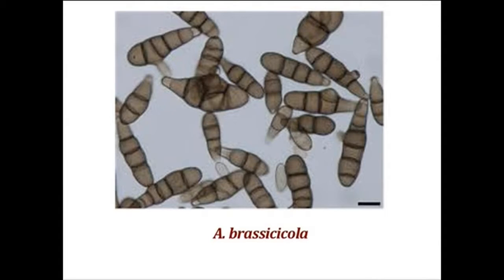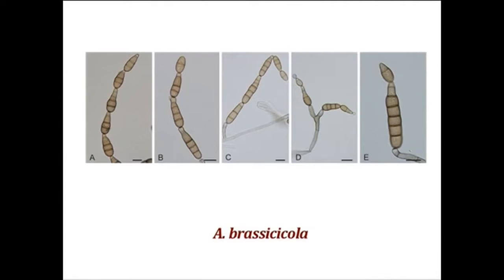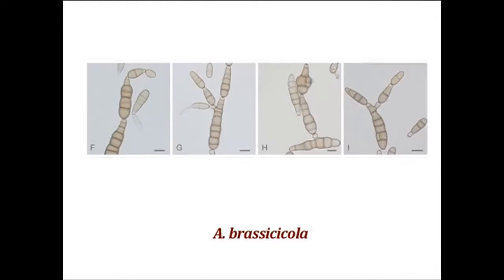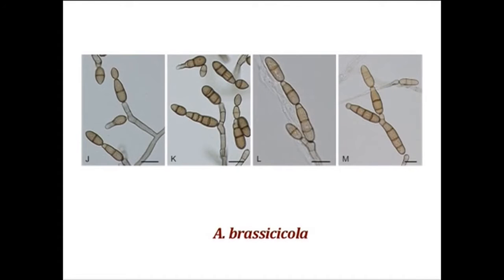Alternaria brassicicola produces smaller conidia with a shorter beak. Mycelium is immersed; hyphae are branched, septate, hyaline at first, later brown or olivaceous brown. Conidiophores arise singly or in groups of 2 to 12 or more. Alternaria raphani usually attacks radish; conidiophores are simple or occasionally branched, septate, and olivaceous brown in colour.